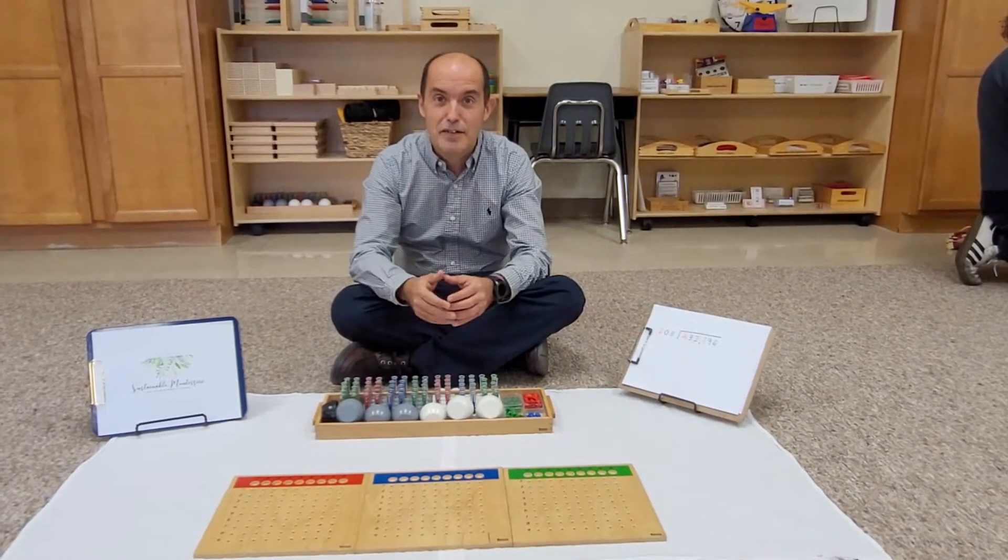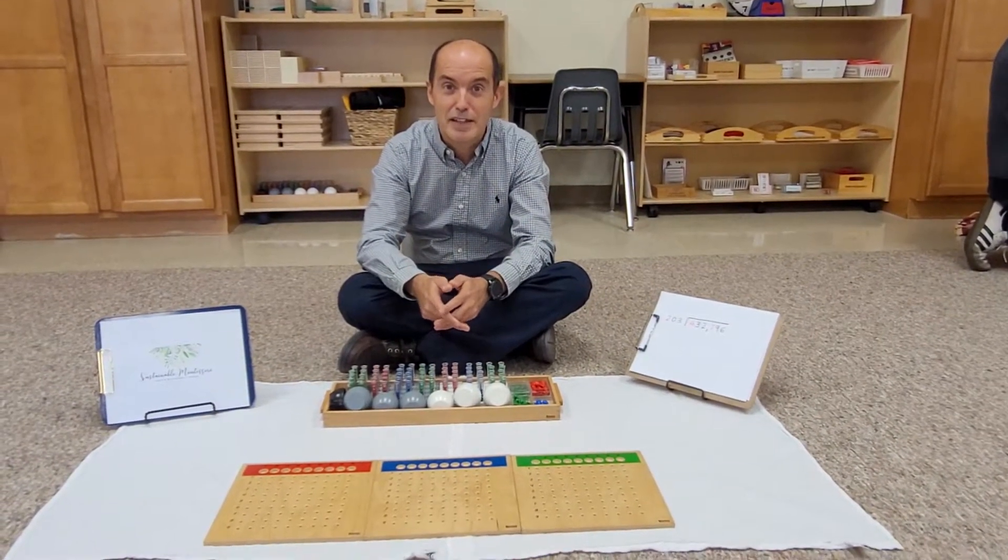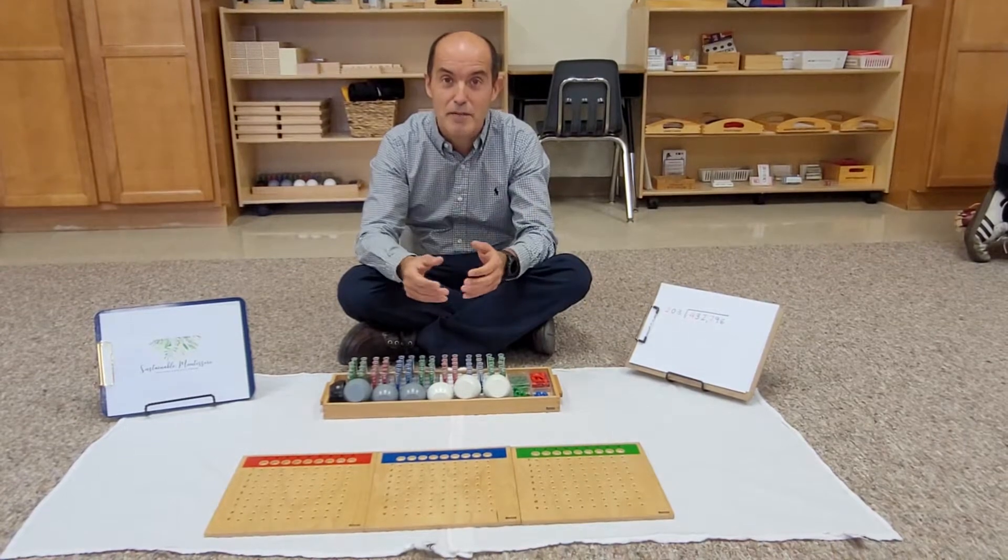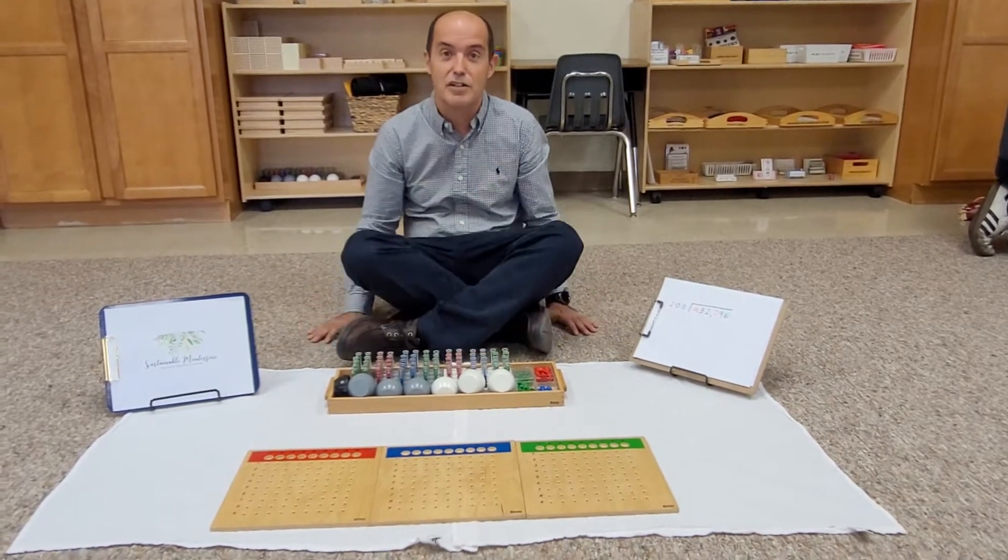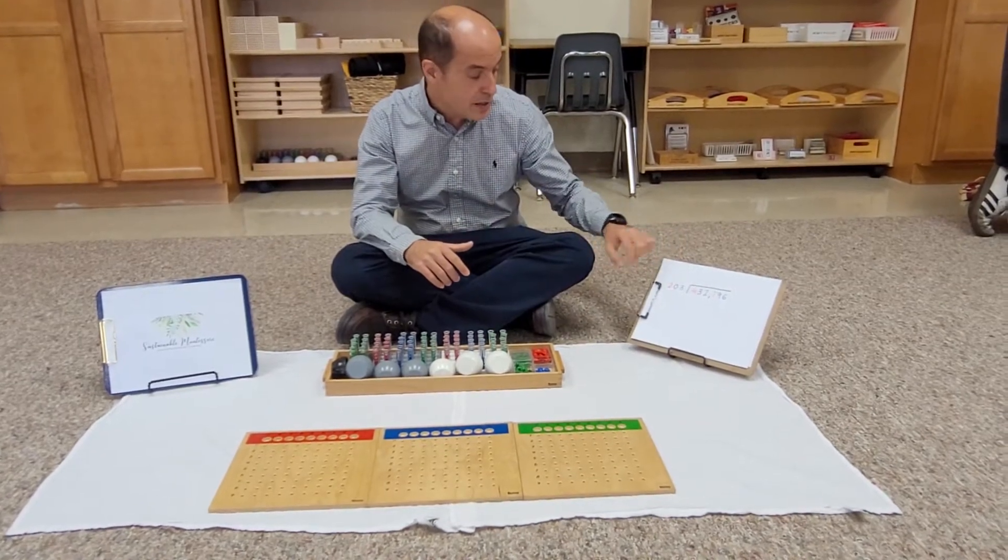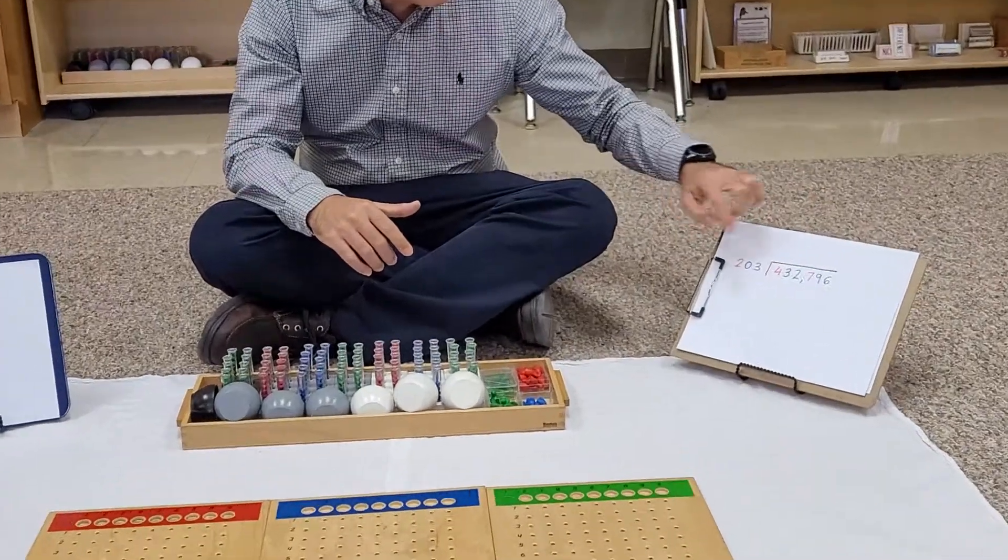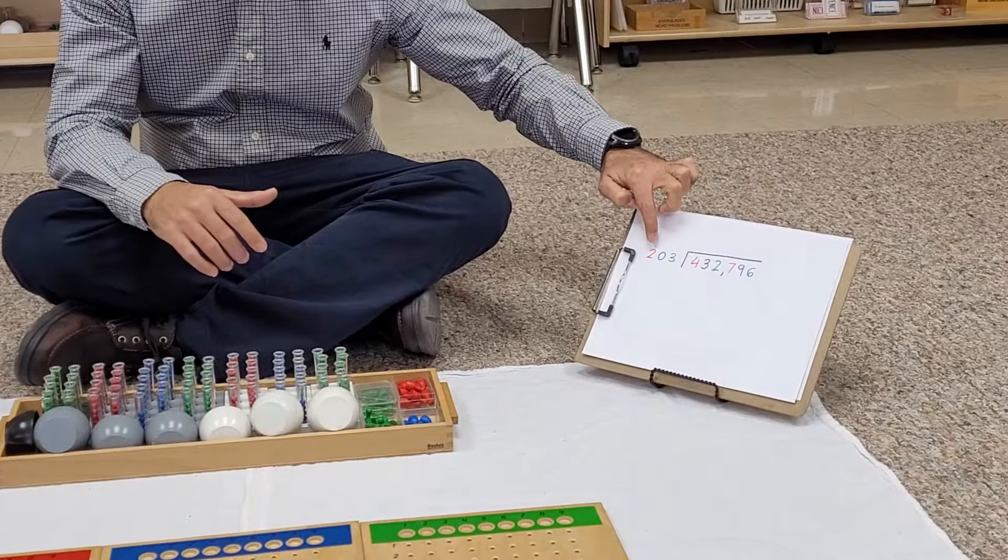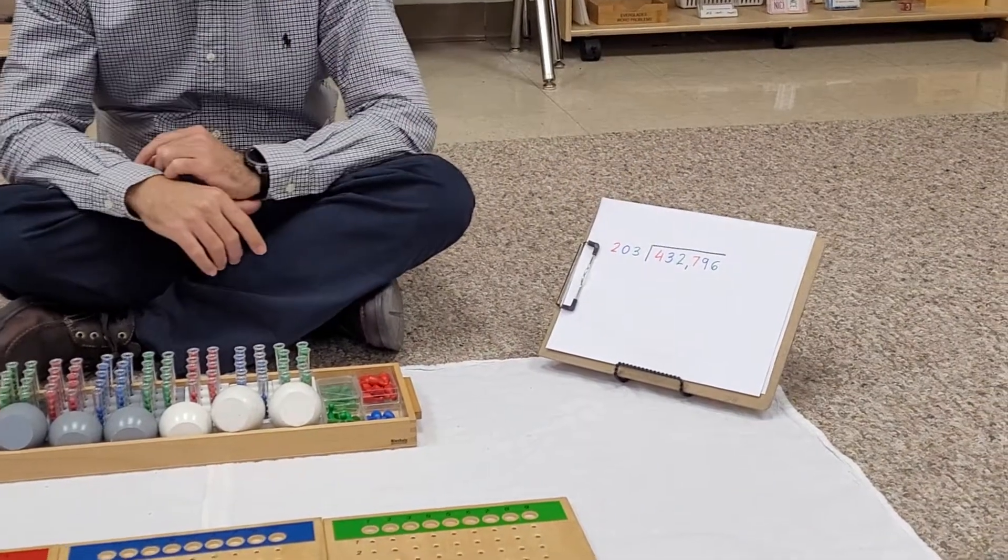Hello, friends of Sustainable Montessori with a new lesson. Today we have been requested a special case using the test tubes. Our equation is 432,796 divided by 203.